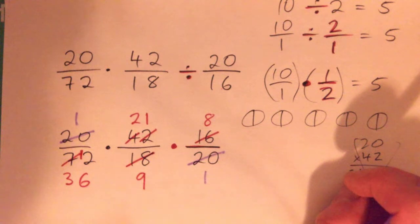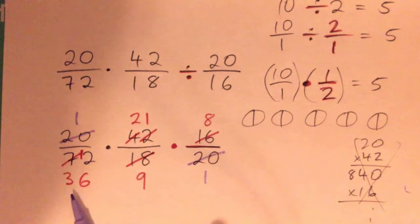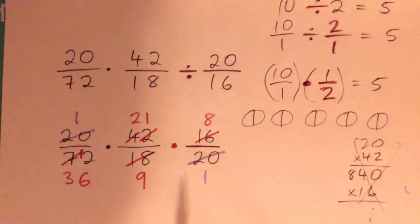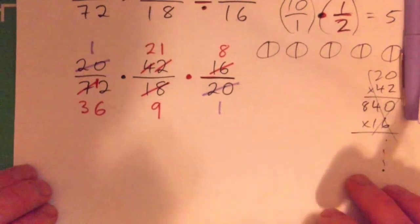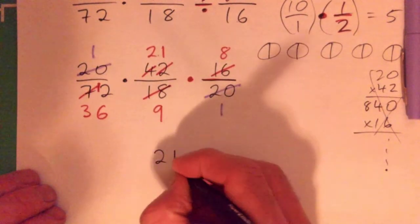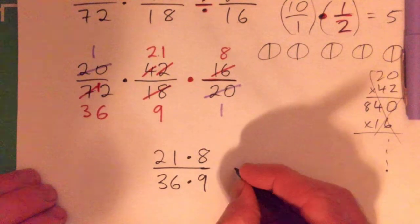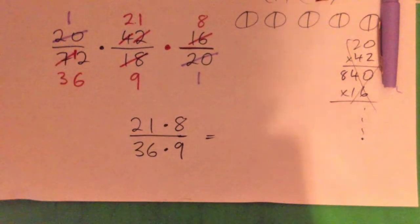And then, do we do the top ones times each other? Well, you can still cross-cancel. I mean, this 8 is an even number, so is the 36. Does something go into 9 and 21? Yeah. So, keep cross-canceling. In fact, if you want, just for fun, let's write it out like this. 1 times 21 times 8, just go 21 times 8 on the top. And on the bottom, just write 36 times 9. Right? So, we're down to there, aren't we? But you can keep cross-canceling, right?